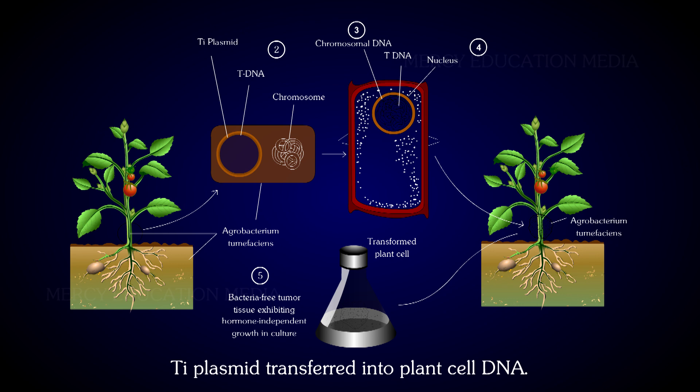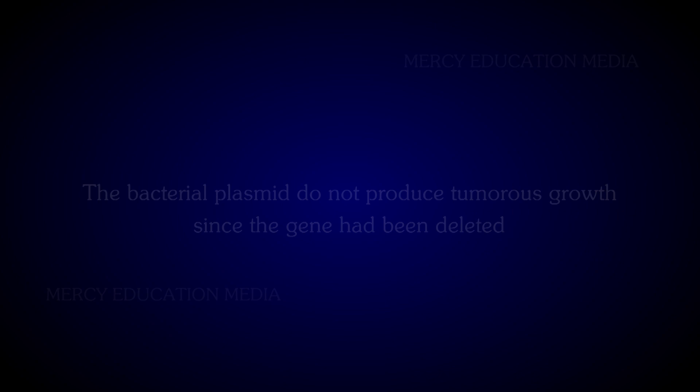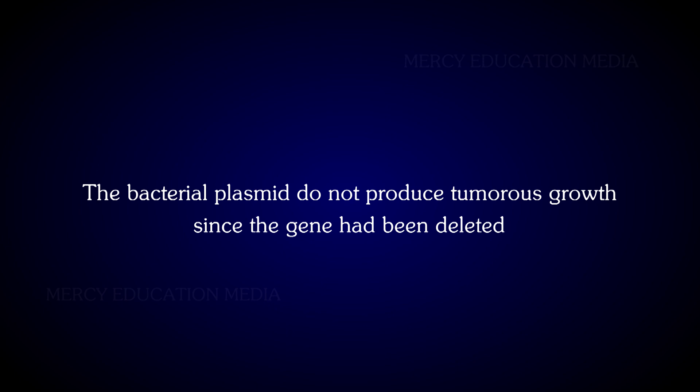T-DNA is the part of the Ti plasmid that is transferred into plant cell DNA. The T-DNA, which holds the desired foreign gene after splicing, is introduced into the plant cell. The bacterial plasmid does not produce tumorous growth since the tumor-inducing gene has been deleted.